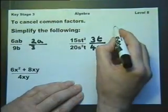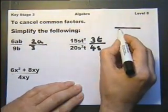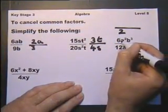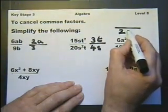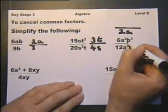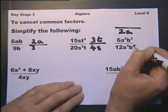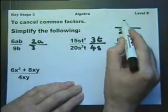The 6 will cancel, leaving me with a 1 on the top and a 2 on the bottom. The a² and the a³ will cancel, leaving me with an a on the bottom. The b³ and the b² cancels, leaving me with just a b on the top.